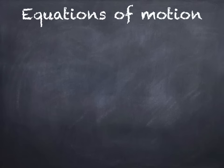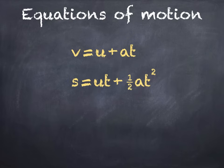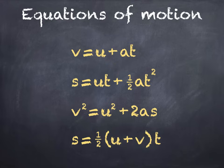Hi there. In this video I'll talk about the equations of motion: v equals u plus at, s equals ut plus half at squared, v squared equals u squared plus 2as, and s equals half u plus v times t.